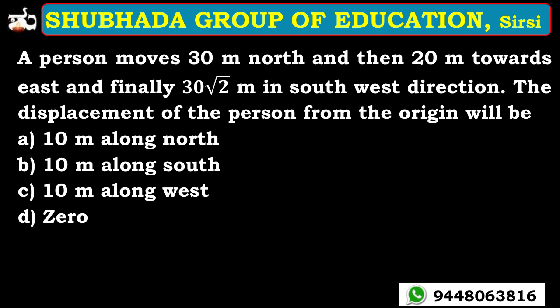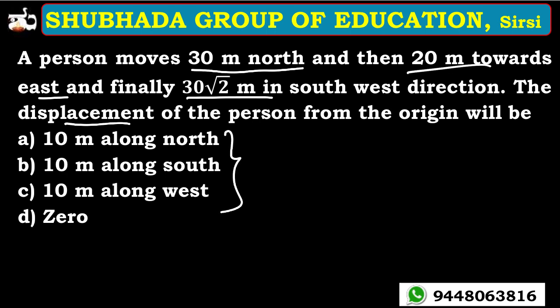Look at the first problem: a person moves 30 meters north and then 20 meters towards east, and finally 30√2 meters in the southwest direction. The displacement of the person from the origin is the question, and there are four options given.